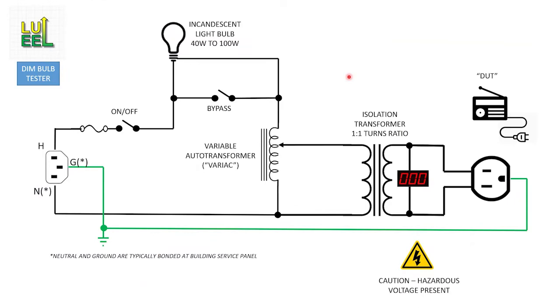So the Variac and the incandescent bulb work together. The Variac is providing an adjustable limit to the voltage supply to the DUT and the incandescent bulb is providing an upper limit to the current supply to the DUT.